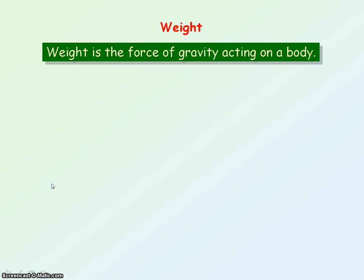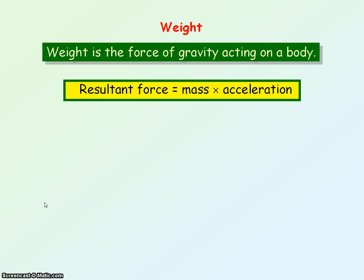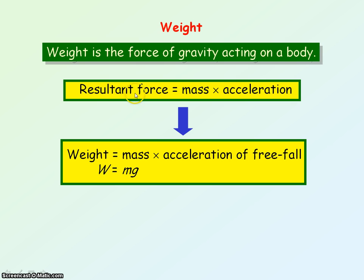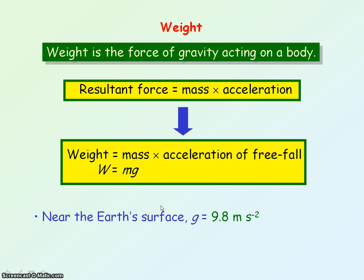Weight is the force due to gravity that acts on an object. It's important that weight is a force, not mass. We find the weight of an object using resultant force equals mass times acceleration, where our force represents the weight — the force of gravity — which equals the mass times the acceleration of freefall, g, which near the Earth's surface is equal to 9.8 metres per second squared. Weight is measured in newtons, mass in kg, and g in metres per second squared.